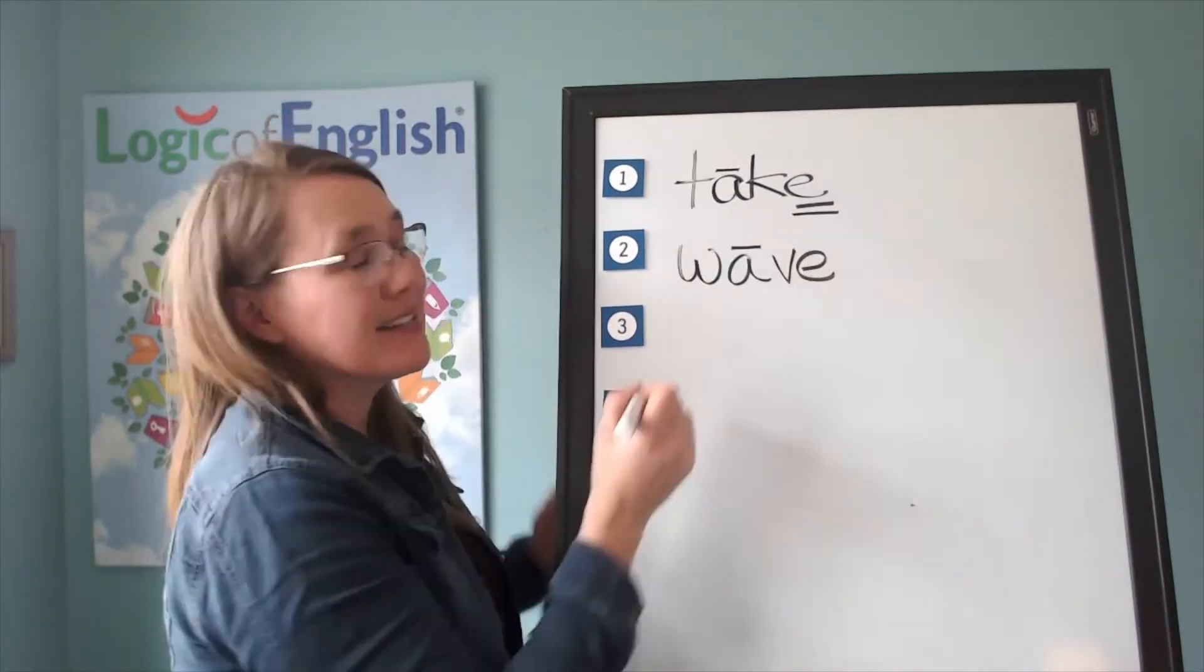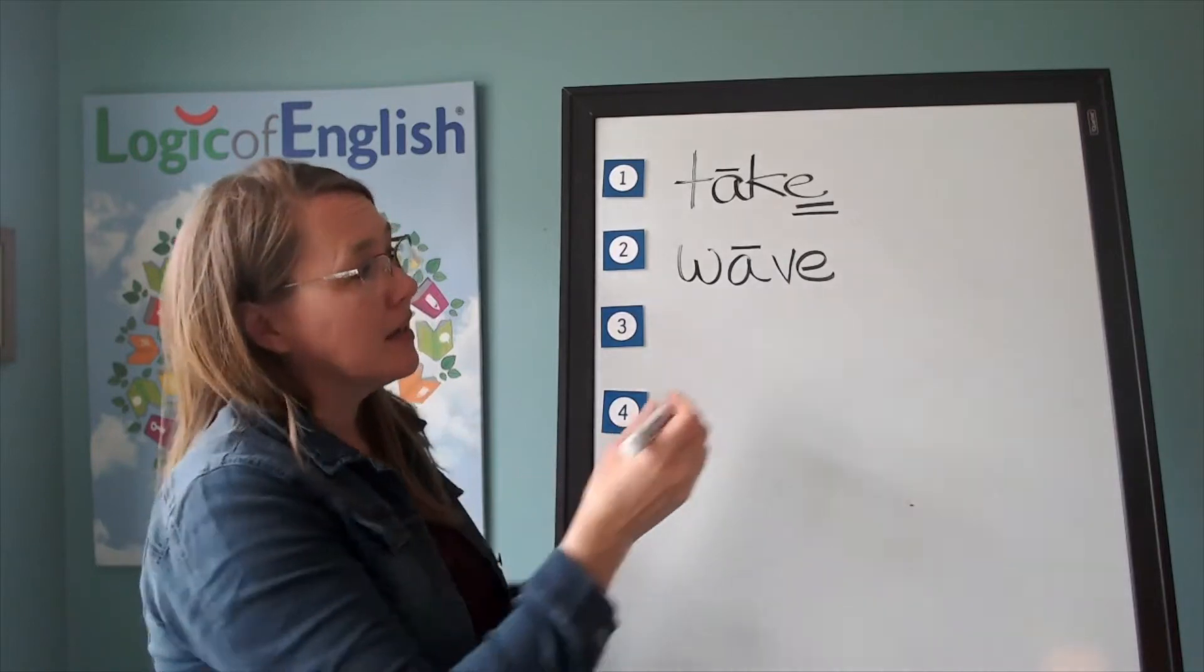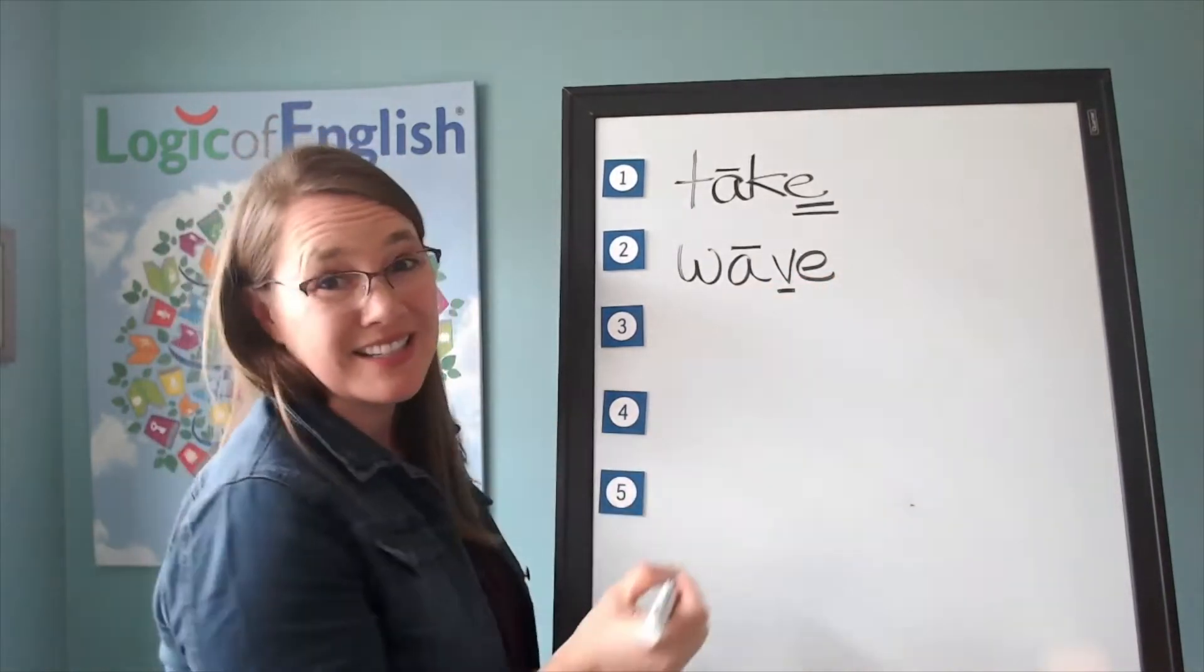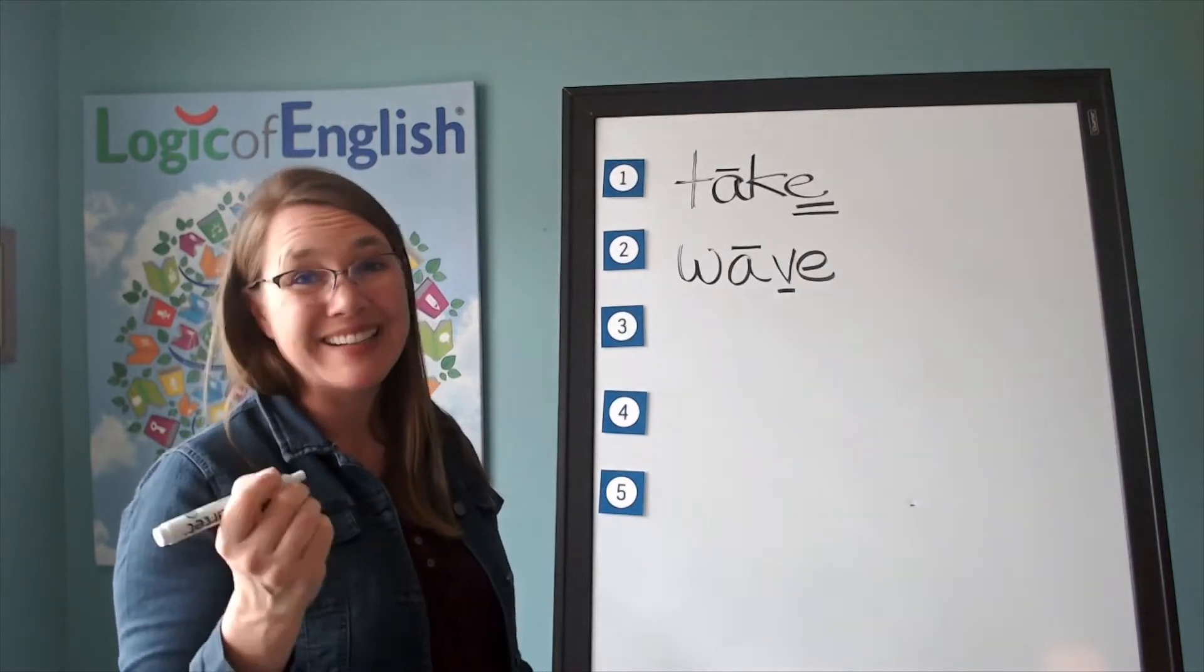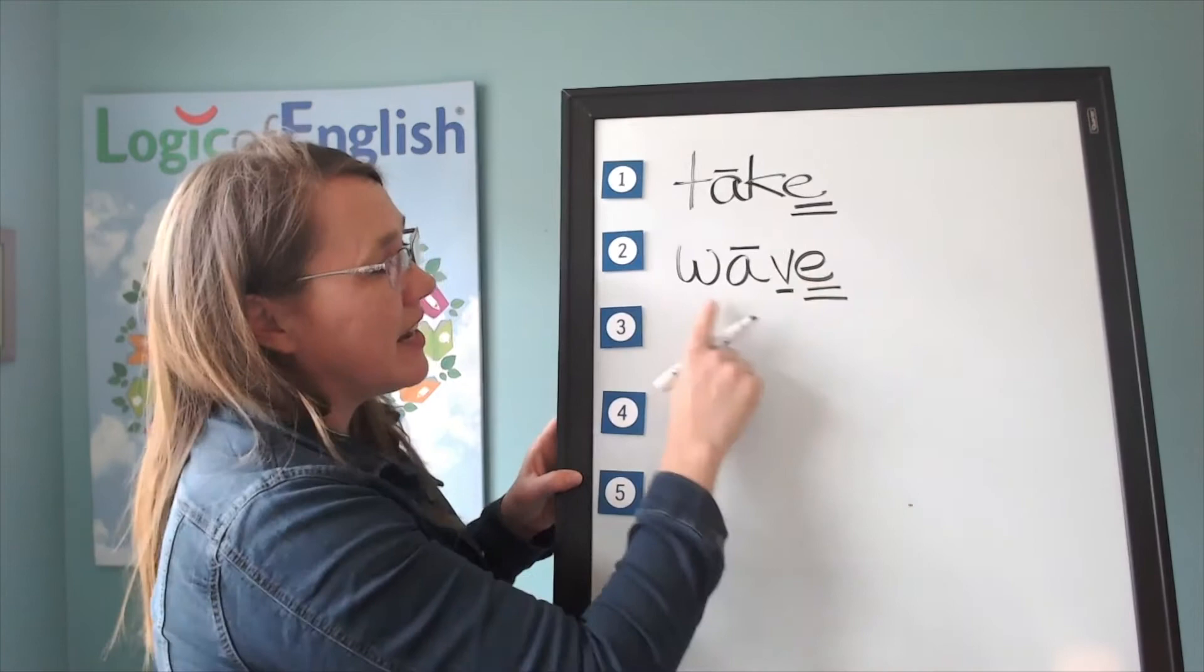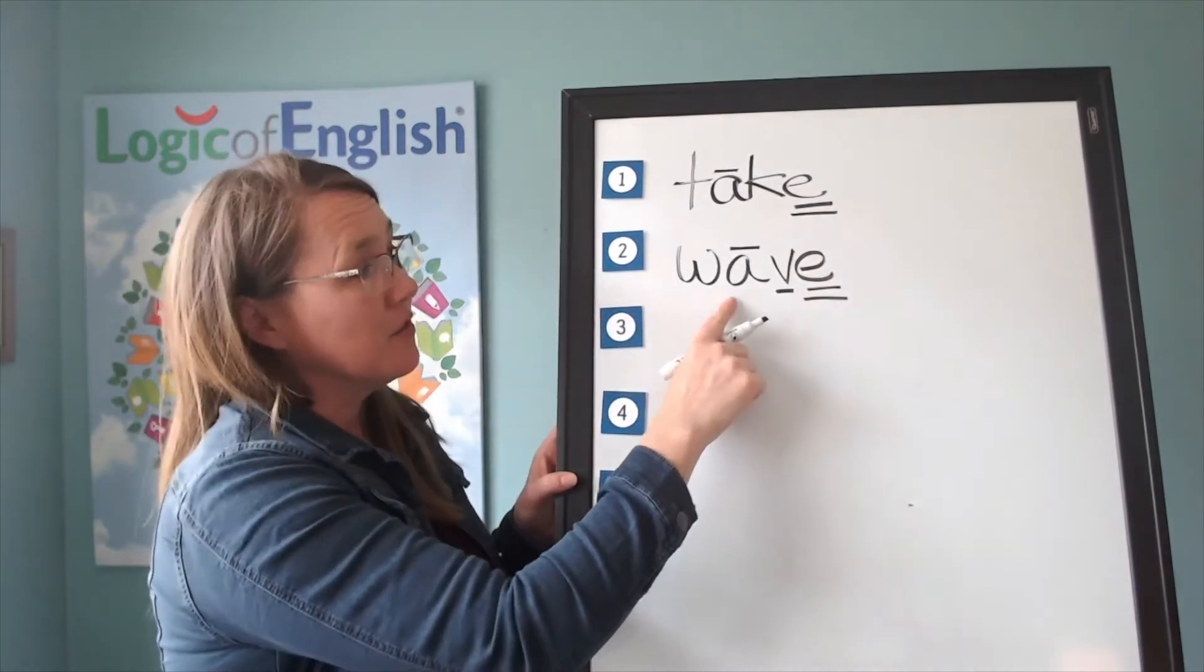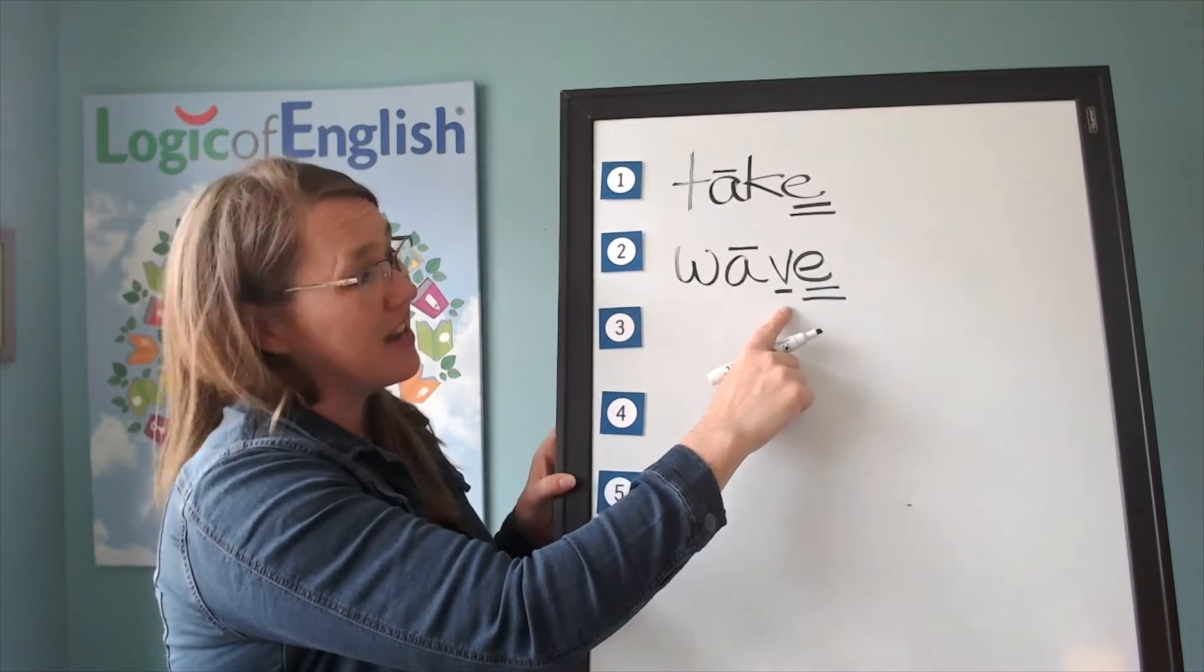You're right. It makes the vowel say its long sound. And the second reason is this. English words do not end in V. Therefore, add an E. So we have a silent final E for two reasons. To make the vowel say its long sound and because English words do not end in V.